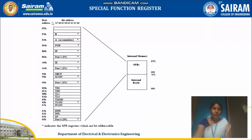In the SFR — special function registers — each address corresponds to a specific register. For example, address 80H corresponds to port 0, port 1 corresponds to 90H, port 2 corresponds to A0H, and port 3 corresponds to B0H. You can access the port either directly by using the port number or by using this address. Even the accumulator can be accessed either by using 'A' or by its address E0H. The B register address is F0H. Each special function register has its own address, and using this address you can access that register or access it by its name.